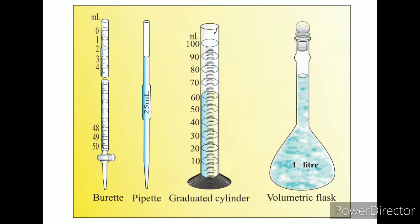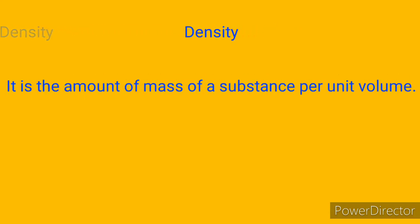Volume is measured in the lab using instruments such as a burette, a pipette, and a graduated cylinder. A volumetric flask is used to prepare a solution of one liter. The next quantity we are going to see is density. Density is the amount of mass of a substance per unit volume.